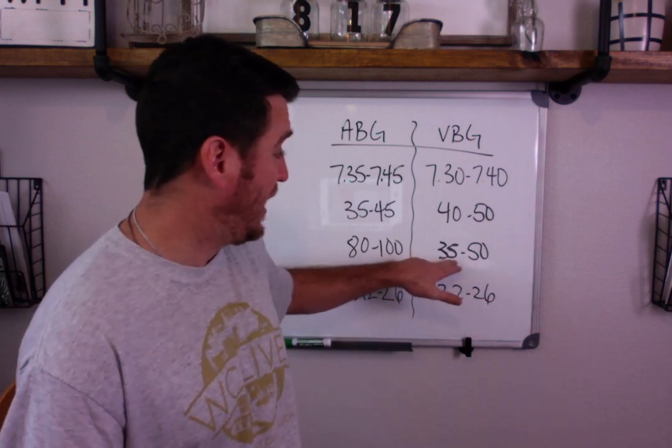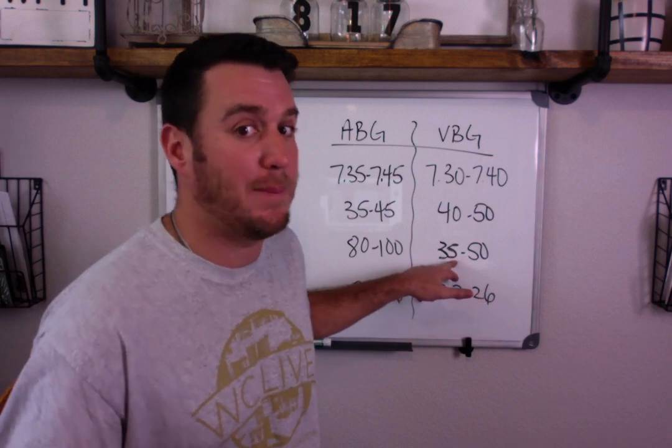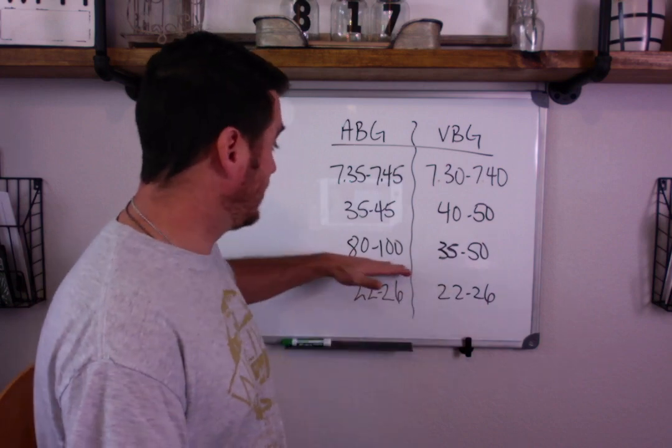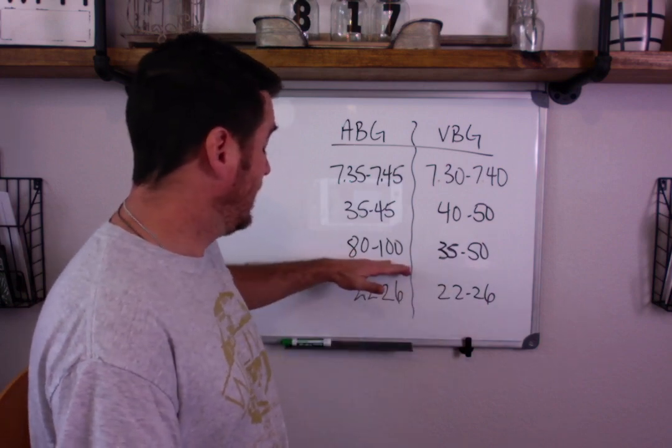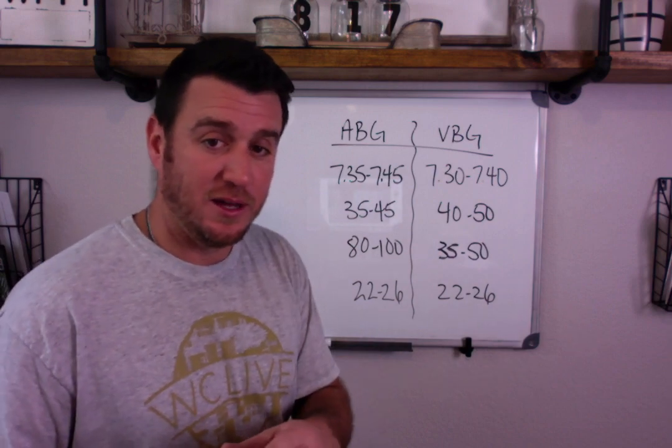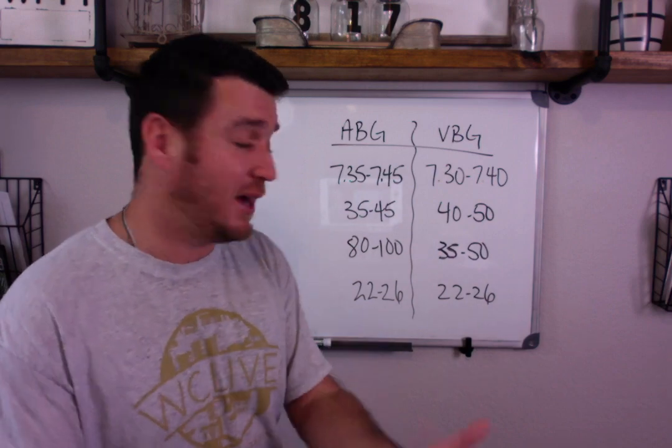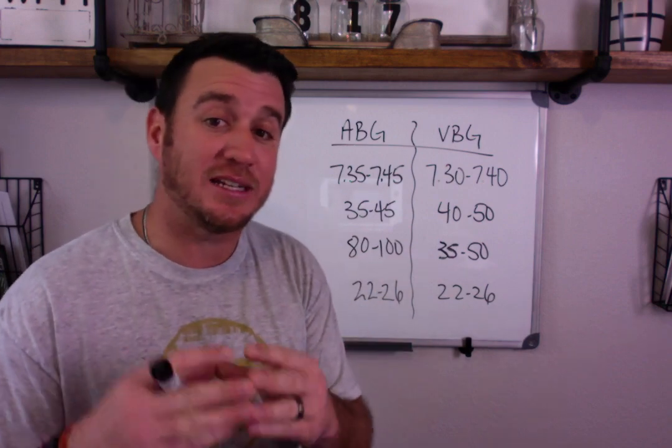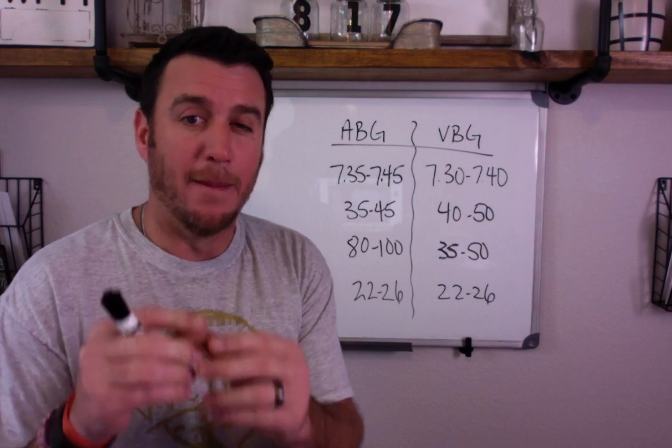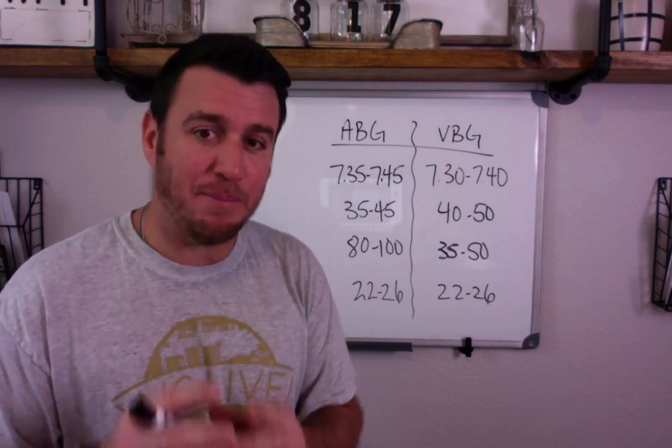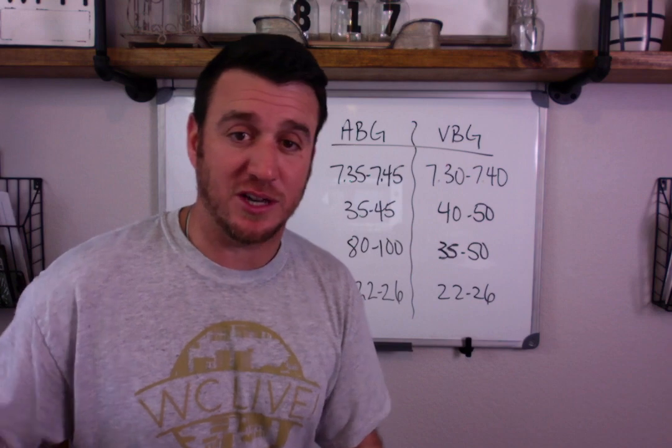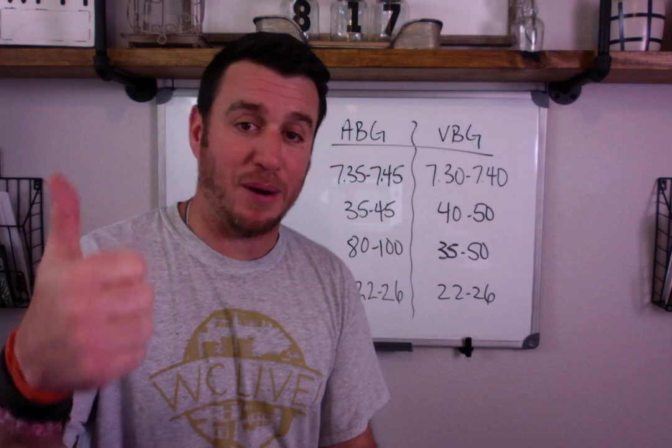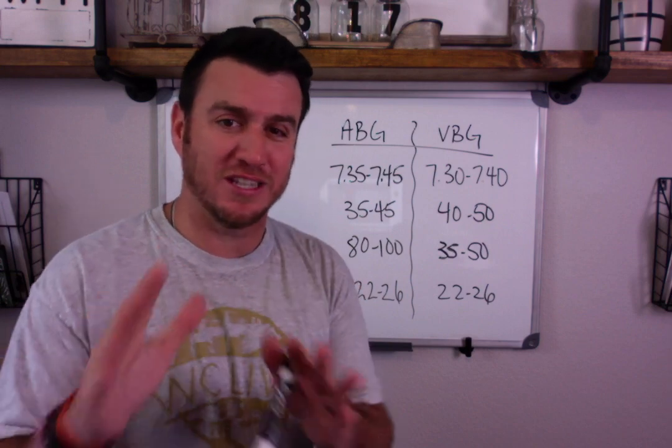Don't fall into that trap. Don't look at this and go, oh 35, they must be hypoxic or hypoxemic. Two different terms there. When you look at an arterial blood gas, you can assess hypoxemia, the level of oxygen in the blood by looking at your ABG.